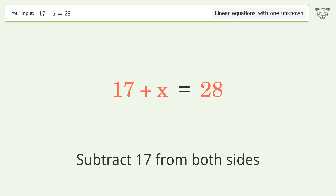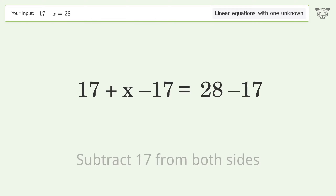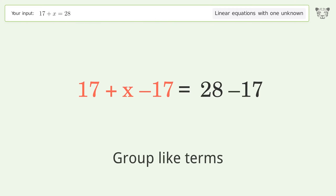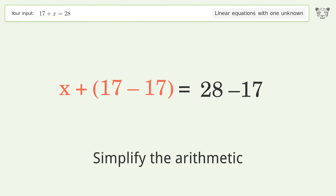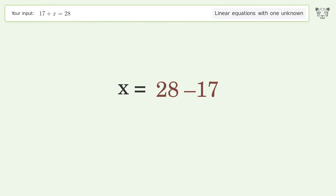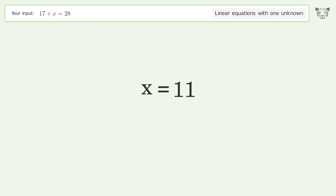Subtract 17 from both sides. Group like terms. Simplify the arithmetic. And so the final result is x=11.